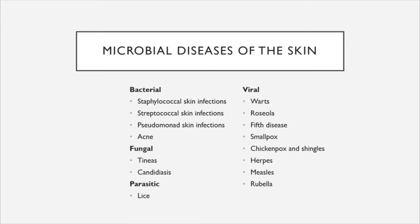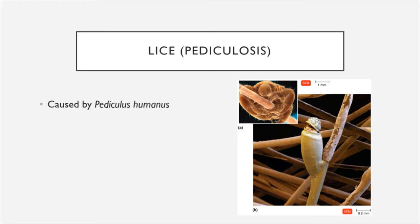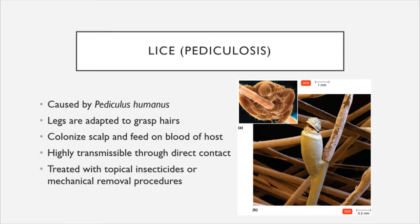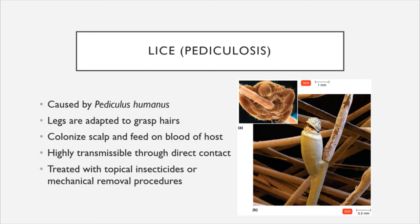Lastly, we have a single parasitic infection of the skin: lice. Lice is caused by the insect Pediculus humanus and is also referred to as pediculosis in medical terminology. As seen in this electron microscope image, these tiny insects have legs specially adapted to grasp human hairs. They colonize the scalp, bite it, and feed on the blood of their hosts. They are highly transmissible through direct contact and are treated with topical insecticide medications or mechanical removal procedures. There are even individuals and companies that specialize in lice removal.